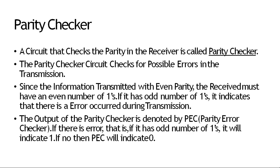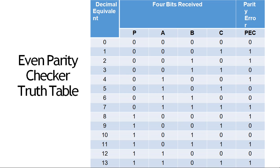अब parity checker क्या होता है? The circuit that checks the parity in the receiver is called parity checker. This parity checker circuit checks for possible errors in the transmission. Since the information transmitted with even parity, the received message must have an even number of ones. If it has an odd number of ones, it indicates that there is an error occurring during transmission. अगर even parity checker है तो even number of ones check करने हैं, और अगर odd parity checker है तो odd number of ones को check करना है।